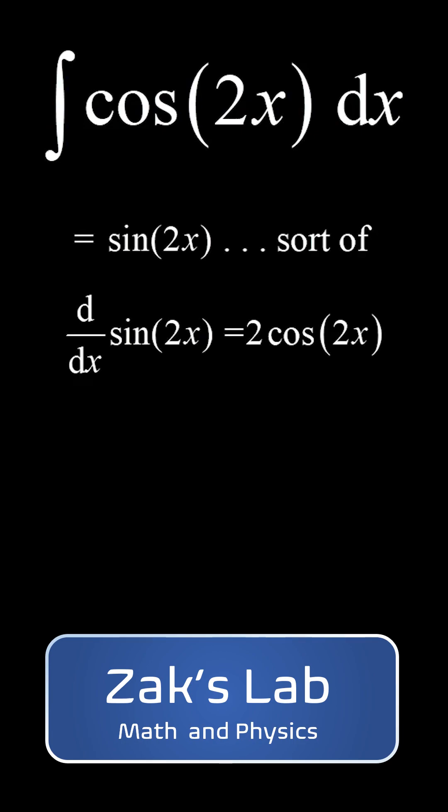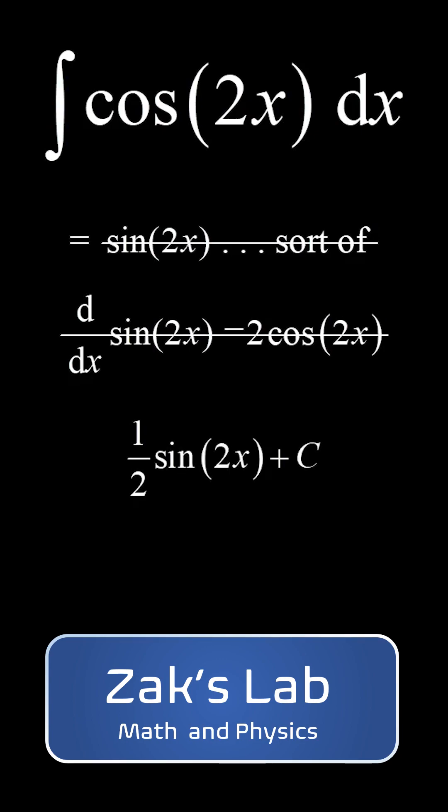But that's not quite right because the chain rule produces a factor of 2 when we differentiate this thing. Well, all we have to do is just put a factor of one half out in front of that sine 2x to take care of what the chain rule does, and we've got the right answer with a simple guess and adjust method.